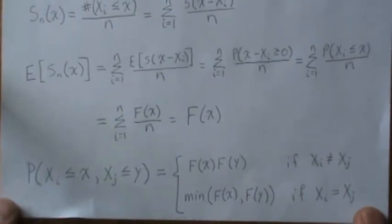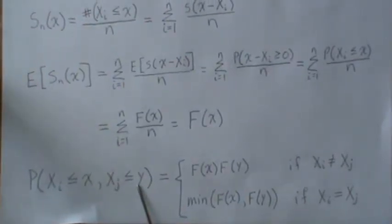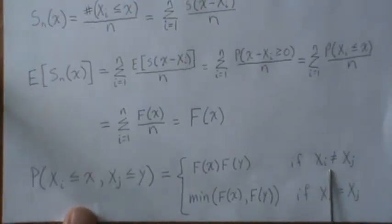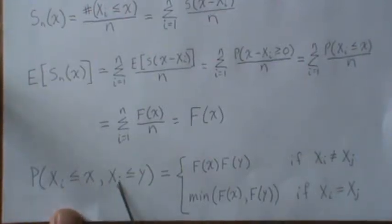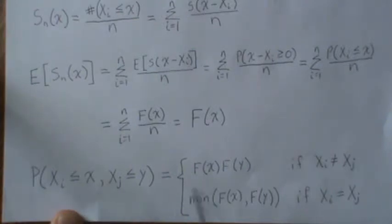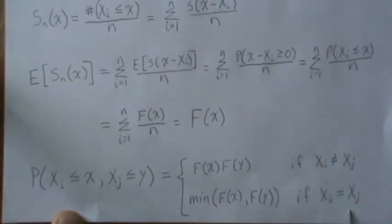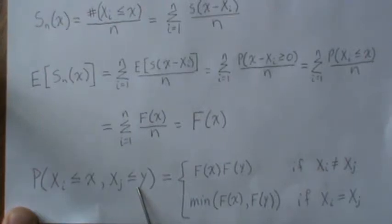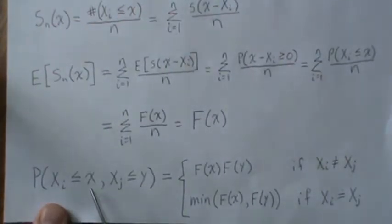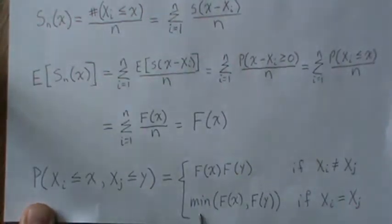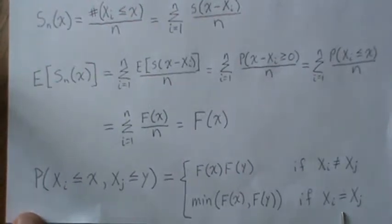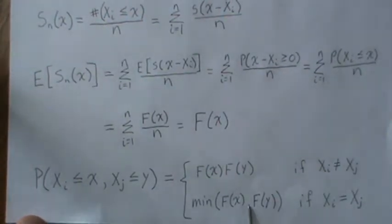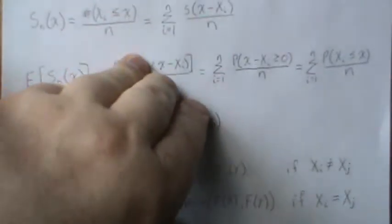Now let's look at the probability that xi is less than x and xj is less than y. When i and j are not equal, these events are independent and can be broken apart, giving F(x)·F(y). But when xi equals xj, both conditions must hold simultaneously, so the only requirement is that they're both less than whatever the minimum is. That probability is the minimum of F(x) and F(y) when they're equal, because that's the only way to satisfy both requirements.